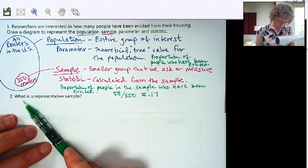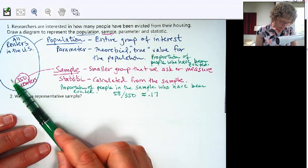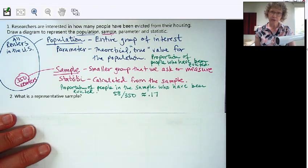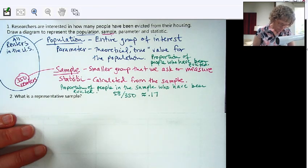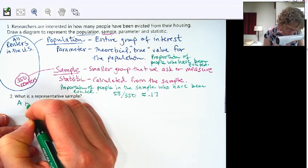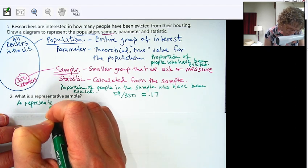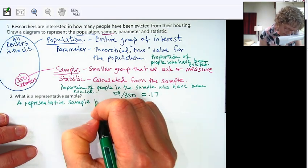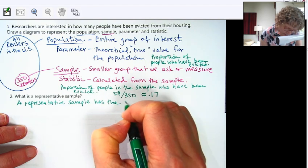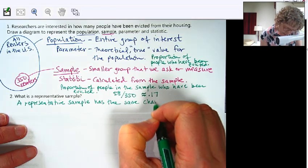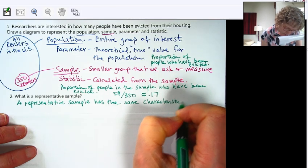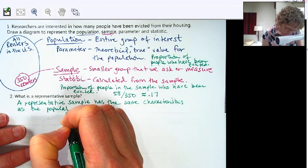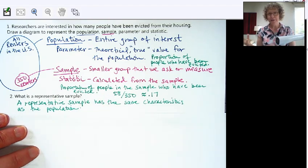So I was just kind of getting into what's a representative sample. So representative sample is one that represents the population, or it has the same characteristics as the population. So representative sample has the same characteristics as the population, at least in the area that we're concerned about.